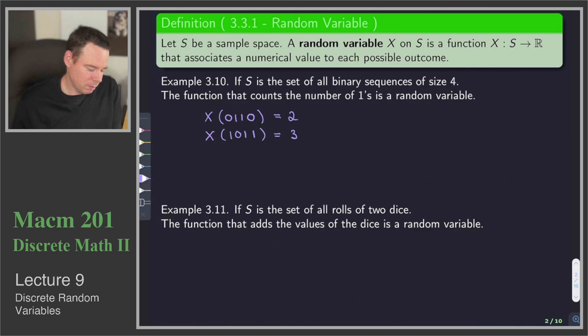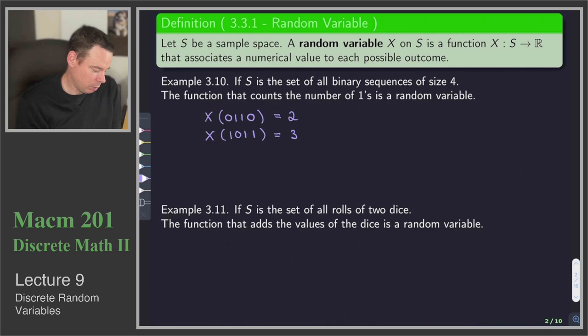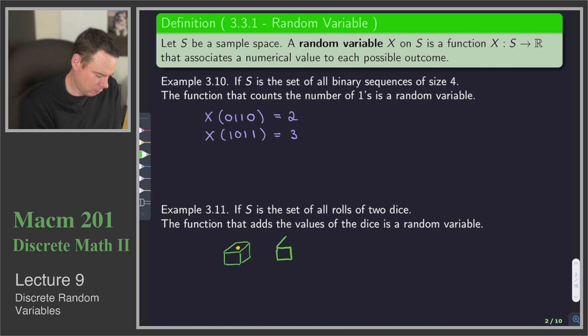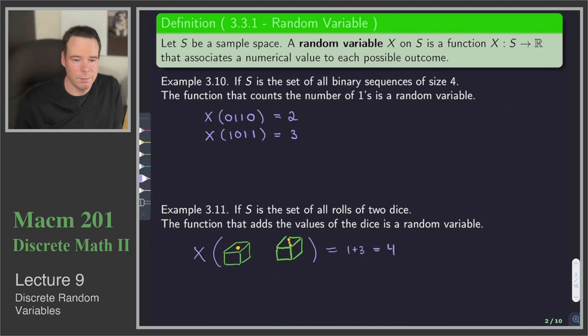Suppose S is the set of all rolls of 2 dice. The function that adds the values of the 2 dice is a random variable. So, for example, if we roll our 2 dice and get a 1 on the first die and a 3 on the second, then our random variable returns the sum — 1 plus 3, or 4 in this case. This function returns a numerical value for any roll of 2 dice: the sum of those 2 dice.